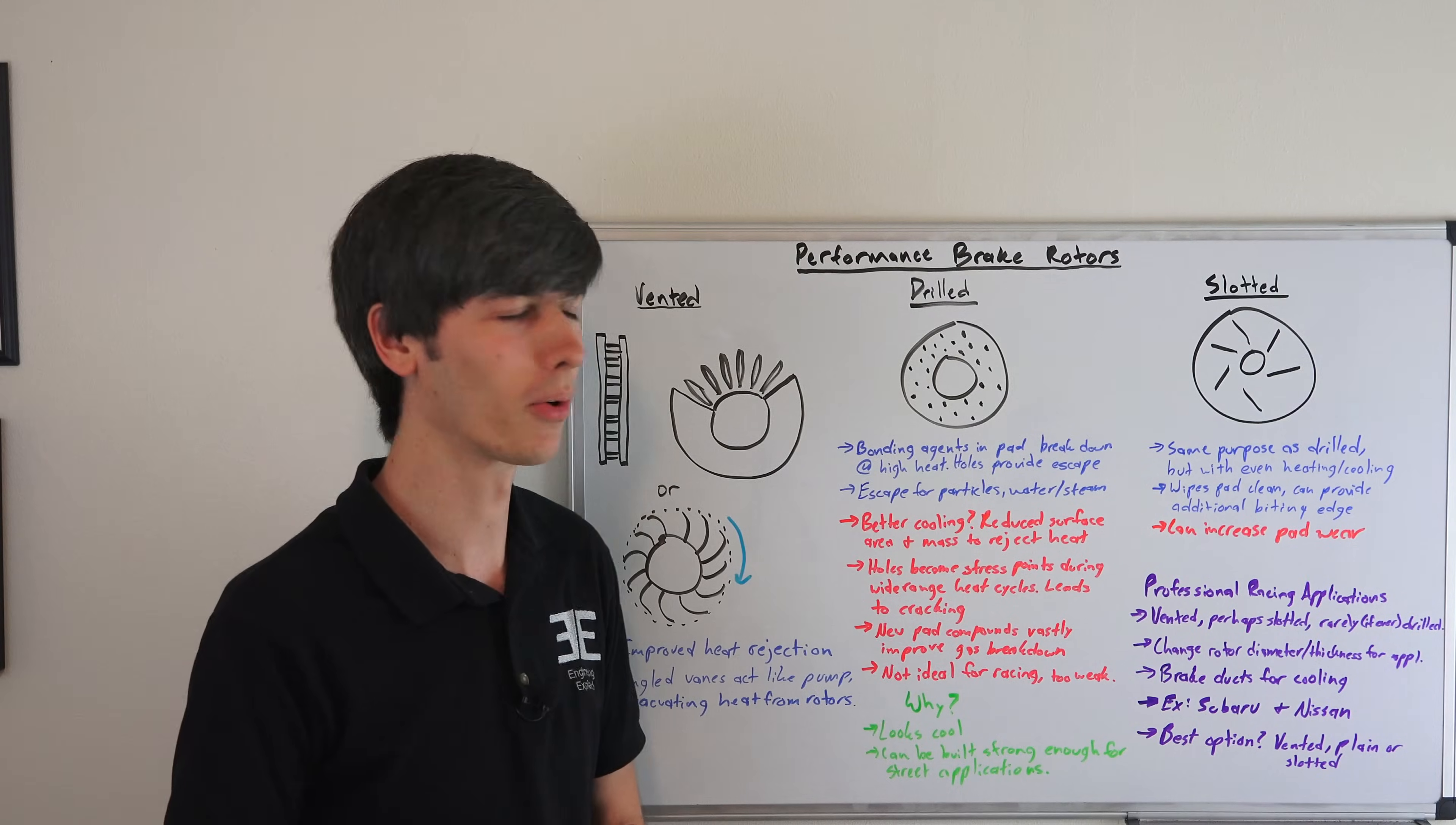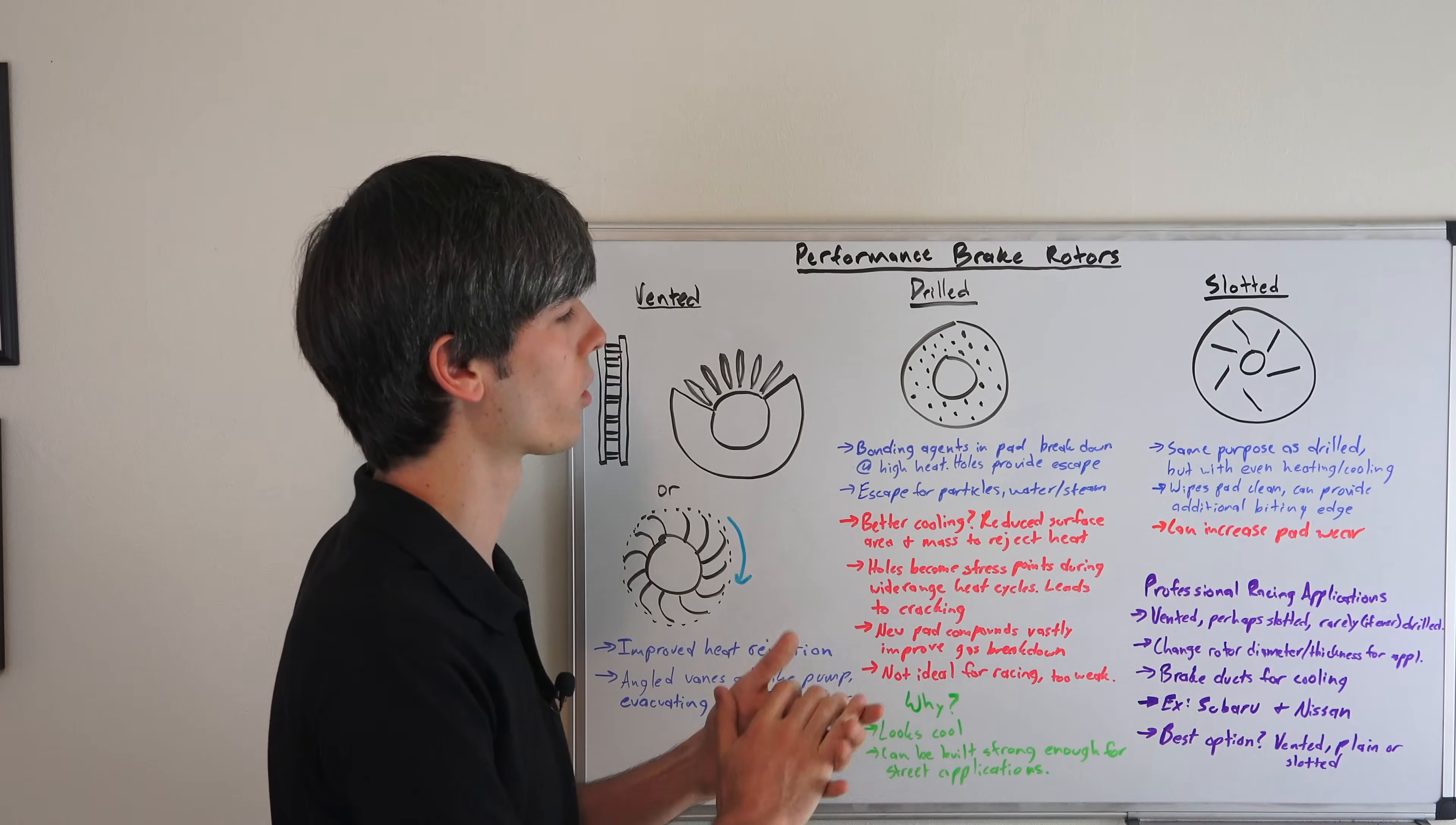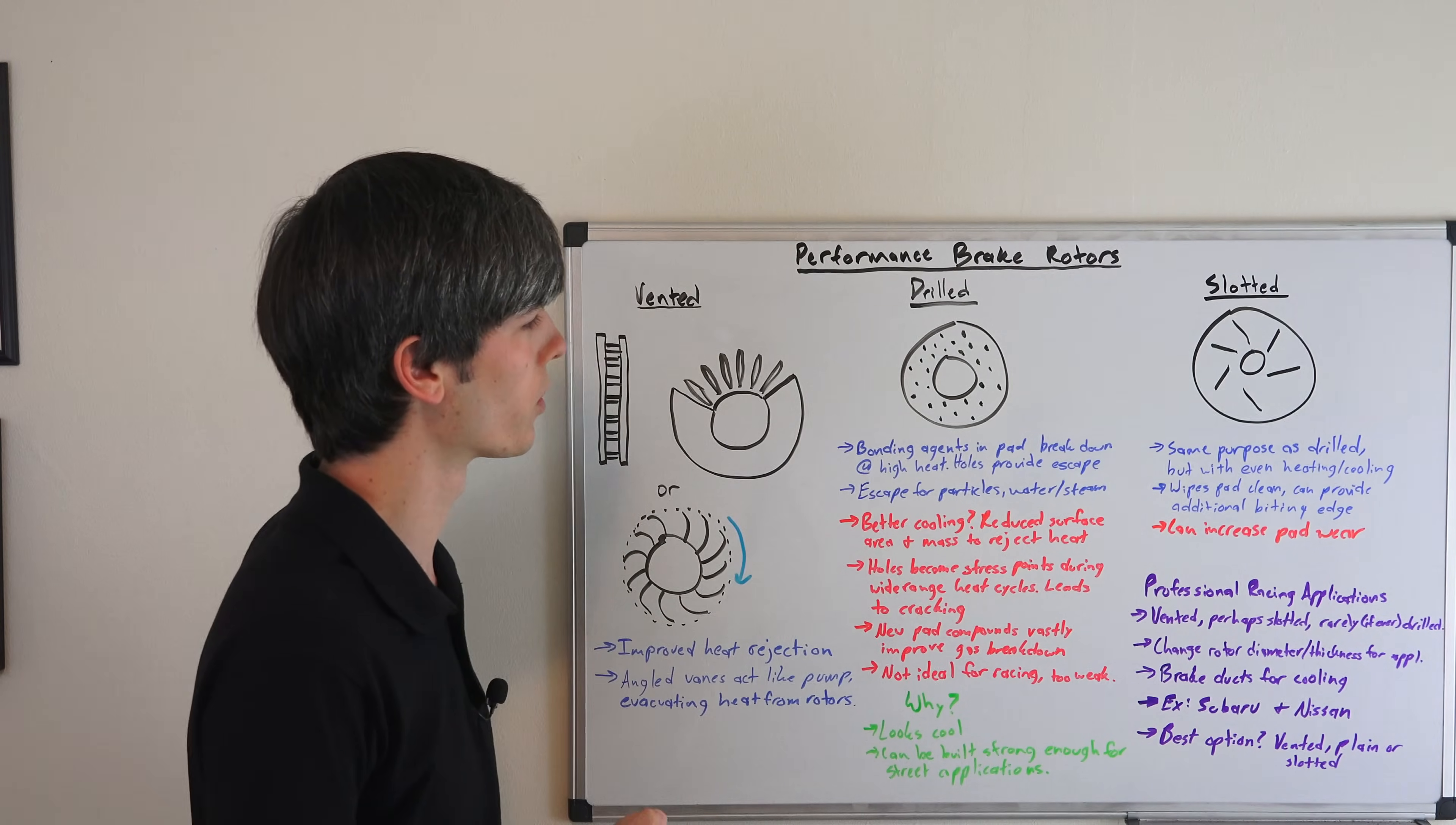They're used on performance cars because it makes them look pretty awesome. Moving on to slotted—these serve basically the same purpose as drilled. You're giving that debris somewhere to evacuate or those gases, and it can also help wipe that pad clean through each rotation. It can also provide an additional biting surface, that leading edge. And that unfortunately can lead to increased pad wear. But these are actually used in racing, unlike drilled.